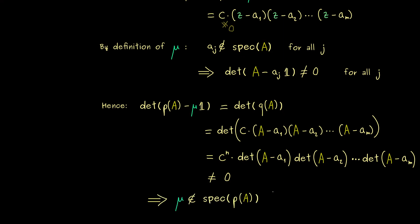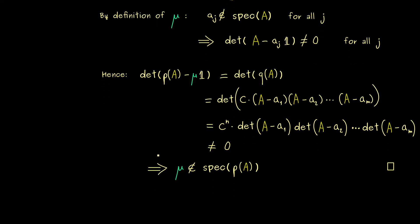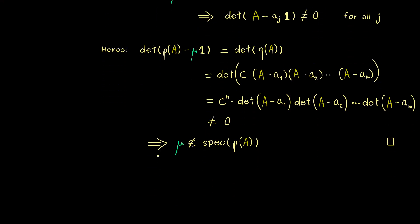With that, our proof is finished — that's all we need for a proof by contraposition. Hence we have this nice spectral mapping theorem for polynomials. To finish today's video, let's look at a quick example.